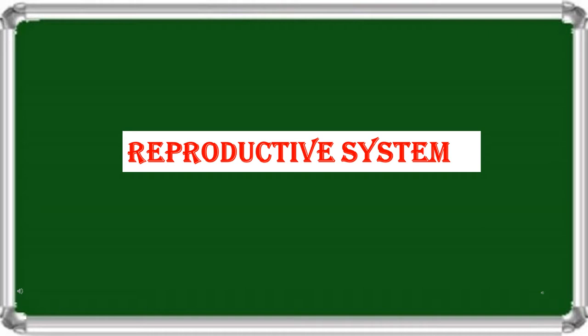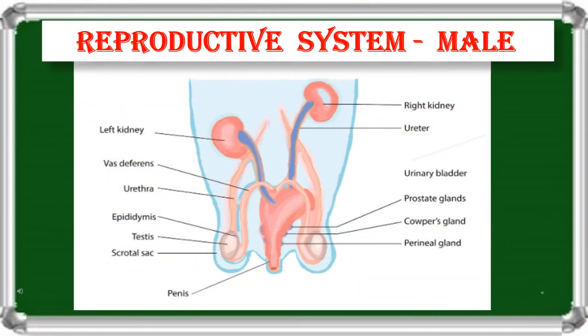Rabbit exhibits sexual dimorphism, that is, male and female sexes are separate and are morphologically different. Let's first see the male reproductive system. It consists of a pair of testes. The testis is ovoid in shape and is enclosed by a scrotal sac in the abdominal cavity. It consists of numerous fine tubules called seminiferous tubules, which lead into a coiled tubule called the epididymis.